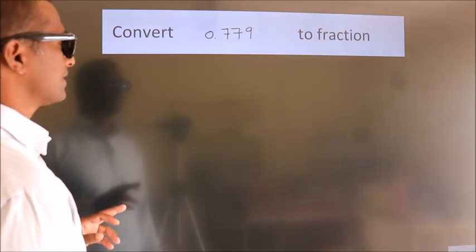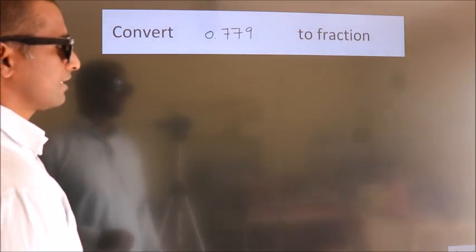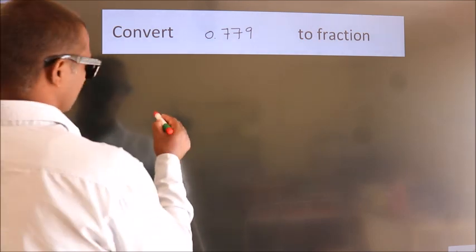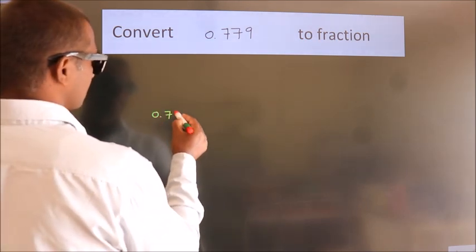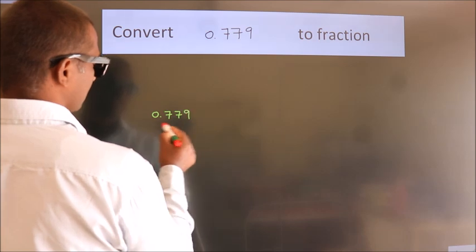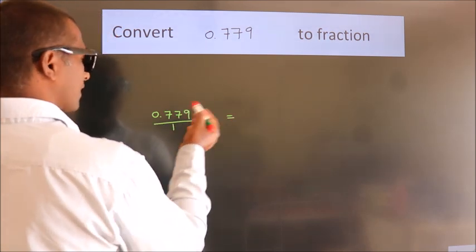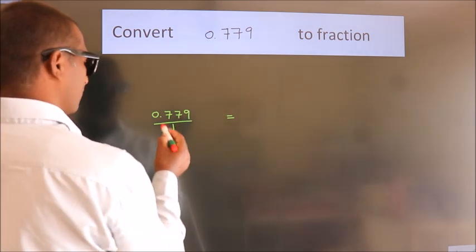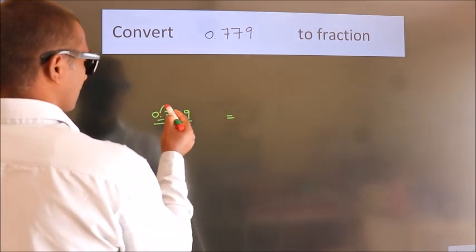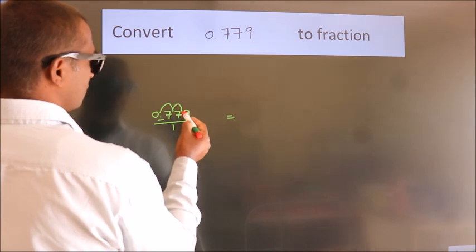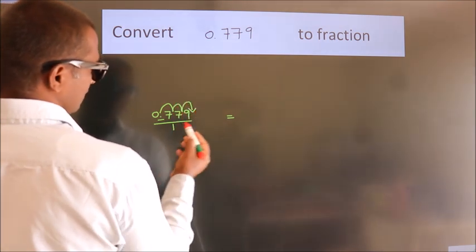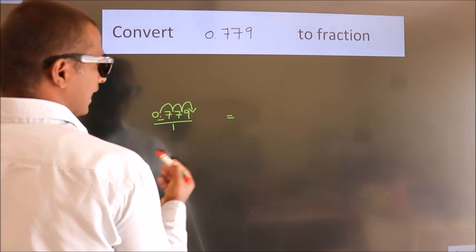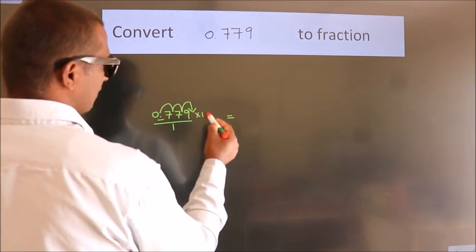Convert 0.779 to a fraction. Given is 0.779. To convert this to a fraction, we have to move this decimal after 1, 2, 3 numbers. To move this decimal after 3 numbers, we have to multiply it with 1000.